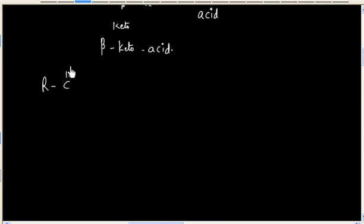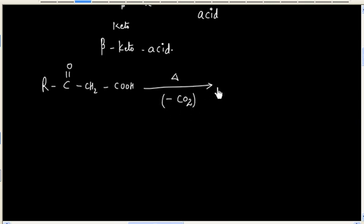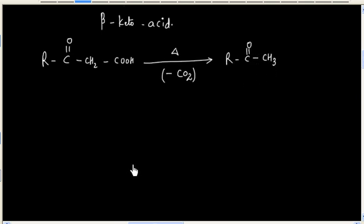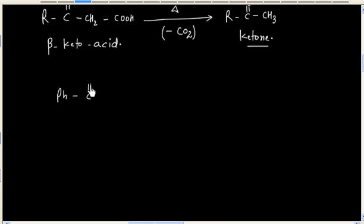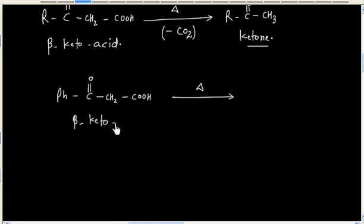So when we have a beta-keto acid and this compound is heated, it will decarboxylate — that is, it will lose one molecule of CO2. Finally we will have a ketone as the product. For example, this beta-keto acid will decarboxylate to give PhCOCH3, which is a ketone.